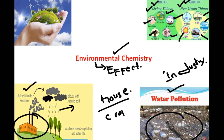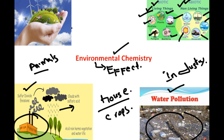Acid rain affects everything present in our environment — houses, different types of crops, and animals. So environmental chemistry means we study the components whose effects fall on our environment. Such type of chemistry is called environmental chemistry.